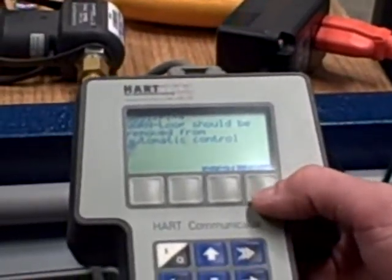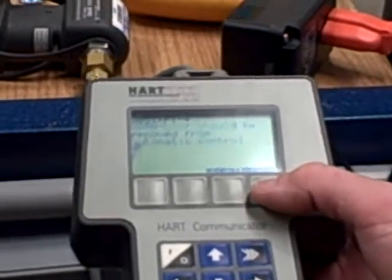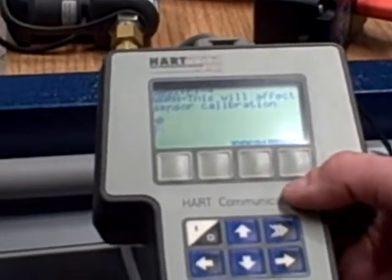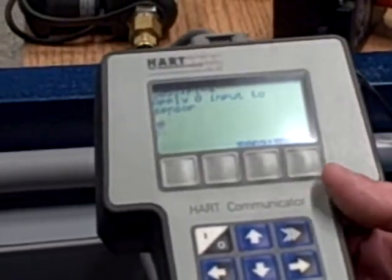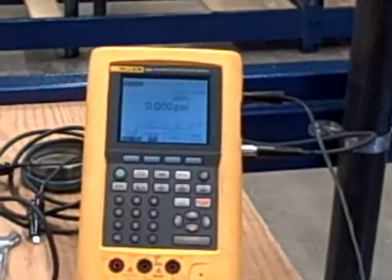It says warning, loop should be removed from automatic control. You don't want to do this in auto. Cool. Okay. This will affect calibration. That's the point. Apply zero input to the sensor. Would you agree we're applying zero pressure to the sensor? Yes. Yes, right. So we hit okay.